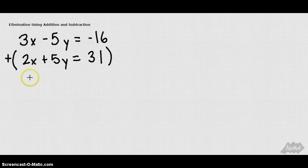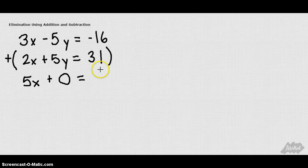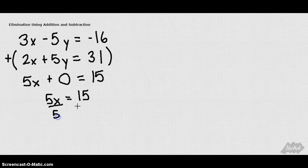So when I do this, I get 3x plus 2x gives me 5x. Negative 5y plus positive 5y is just going to give me 0. Notice how I got rid of that y. And now negative 16 plus 31 is going to give me a positive 15. So I end up with 5x equals 15. If I divide both sides by 5, I get x equals 3.